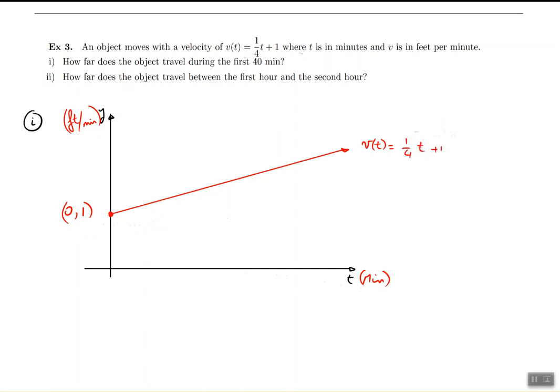So for the first part of the problem, it says what's the distance traveled in the first 40 minutes? So let's put 40 right there. And what's the y-coordinate going to be? Well, plug 40 into the formula and let's see what happens. So velocity at 40 would be 1/4 of 40 plus 1, which is 10 plus 1, which is 11. So the point right there is labeled (40, 11).